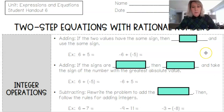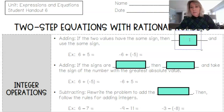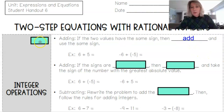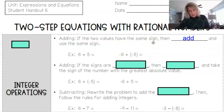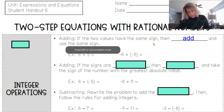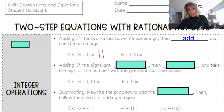When we had integer operations, if we added two integers together and the two values have the same sign, the answer would be like adding and using the same sign. For instance, 6 plus 5 equals 11, and negative 6 plus negative 5 equals negative 11.